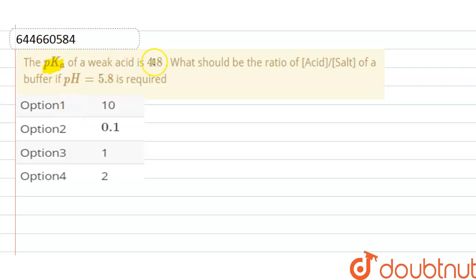The pKa of a weak acid is 4.8. What should be the ratio of acid by salt of a buffer if pH 5.8 is required?